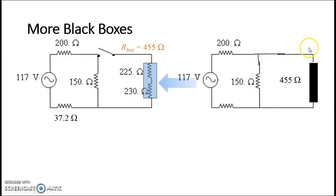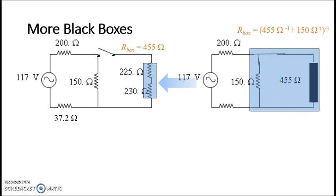Where are we going to put our next black box? Again, stay over here on the right. Leave the 200 and the 37.2 for now. What do you see here? How are the 150 and the 455 related? Are they in series? If you go through the 150, do you have to go through the 455? No. Are they in parallel? Good.